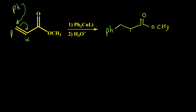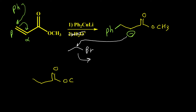Instead of adding acid in the second step, we can also use an alkyl halide to react with the negative charge on the alpha carbon. If we have an alkyl halide like ethyl bromide instead of acid, this negative charge can attack that carbon in an SN2 reaction, giving another alkyl group on the alpha position as well. As a result, we get this product: phenyl on the beta position and ethyl on the alpha position.